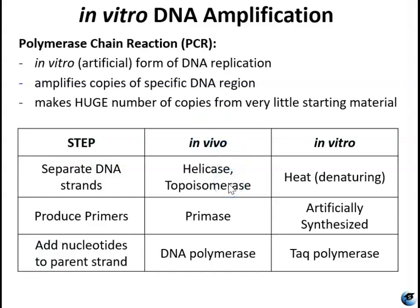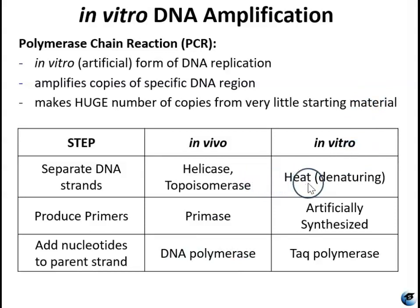In vivo, helicase and topoisomerase are the enzymes that help with strand separation. In vivo, primase makes the primers, and in vivo, DNA polymerase is used to add new nucleotides. Now in vitro, instead of using enzymes to separate the DNA strands, we use heat. Phosphodiester bonds hold the sugar phosphate backbone together — those are covalent bonds which are relatively strong — and hydrogen bonds hold the nucleic acids in the middle together, and hydrogen bonds are relatively weak. So you can denature and break those hydrogen bonds using heat, typically somewhere between 90 and 96 degrees, hot enough to break the hydrogen bonds but not the phosphodiester bonds. The sugar phosphate backbone remains intact.